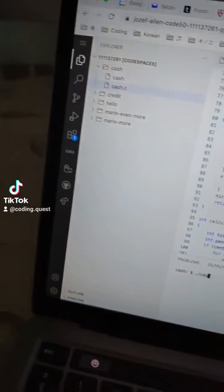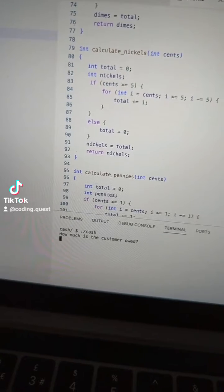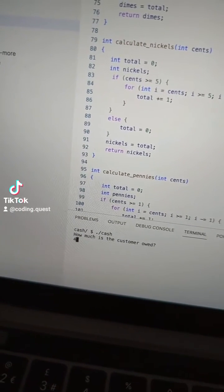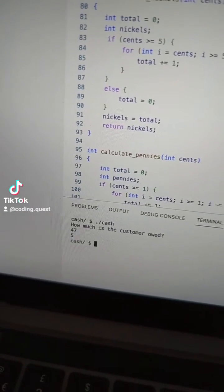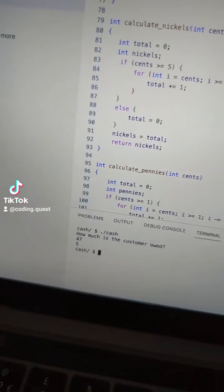So if we run it, I can show you what I mean. For example, if the customer was owed 47 cents, the minimum amount of coins you should be giving them is five.